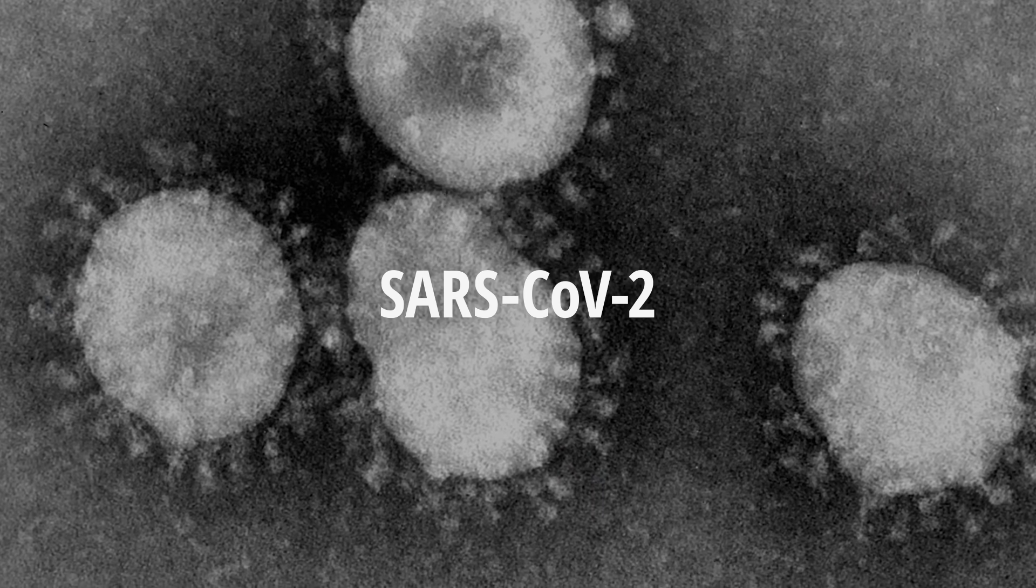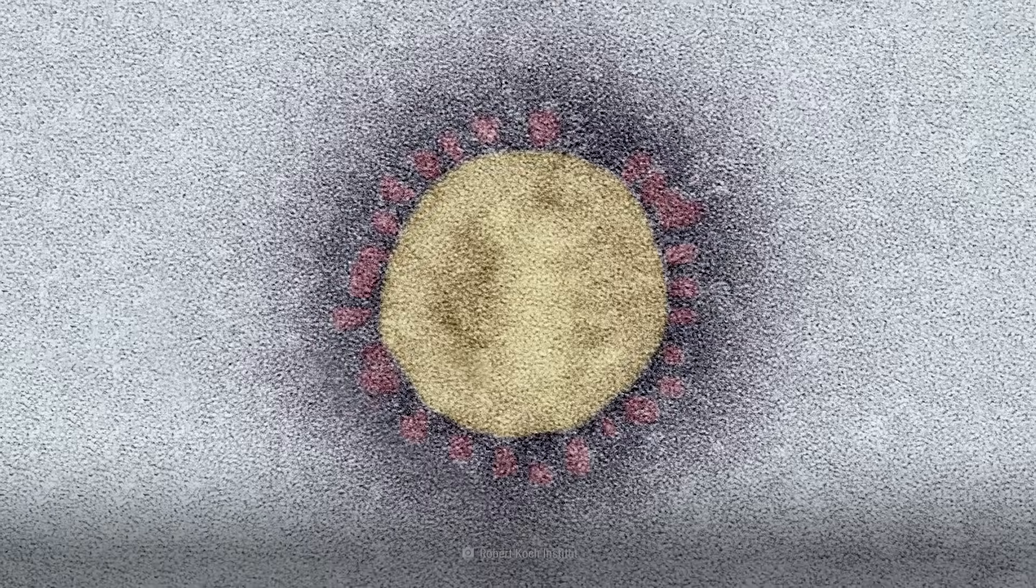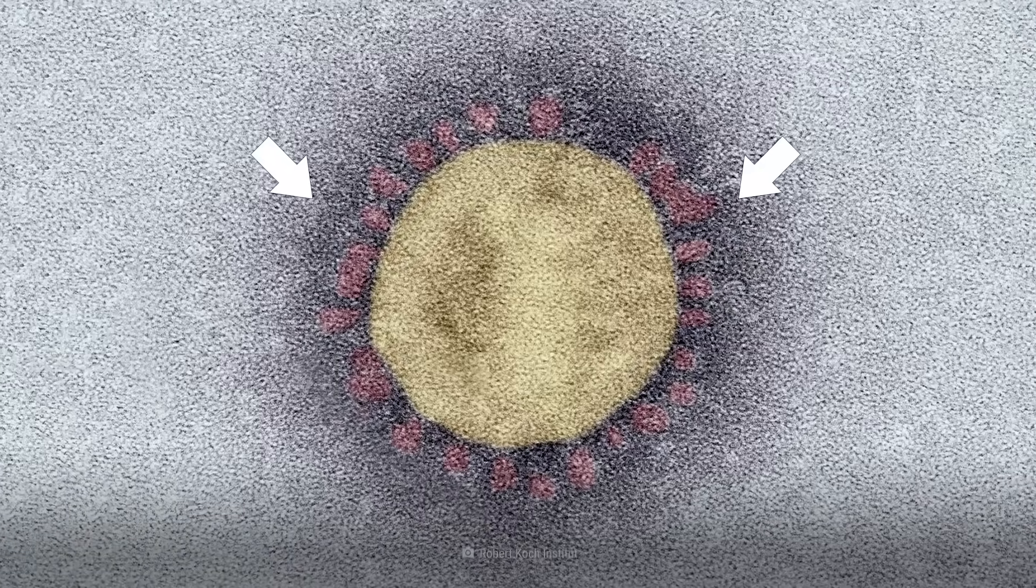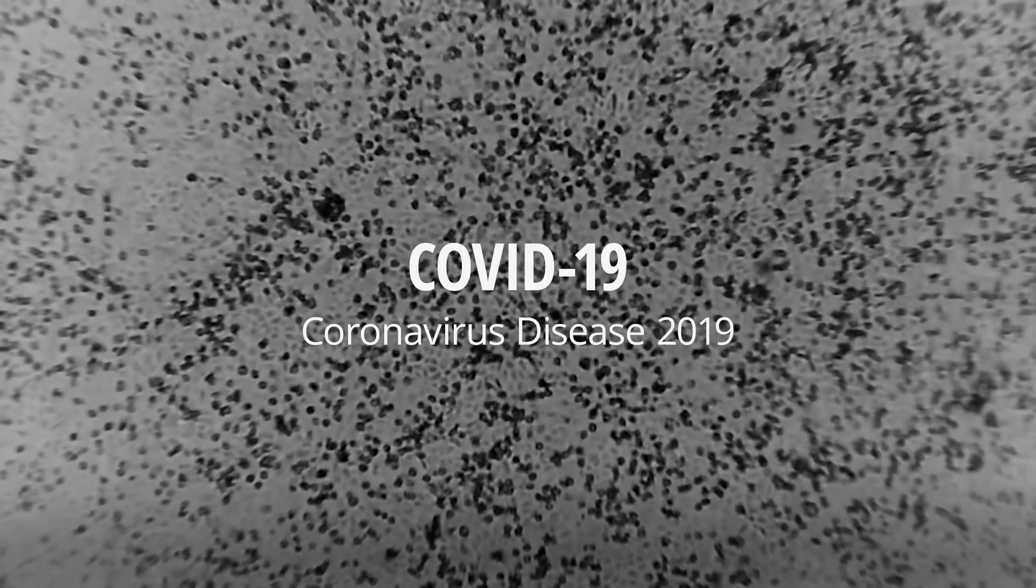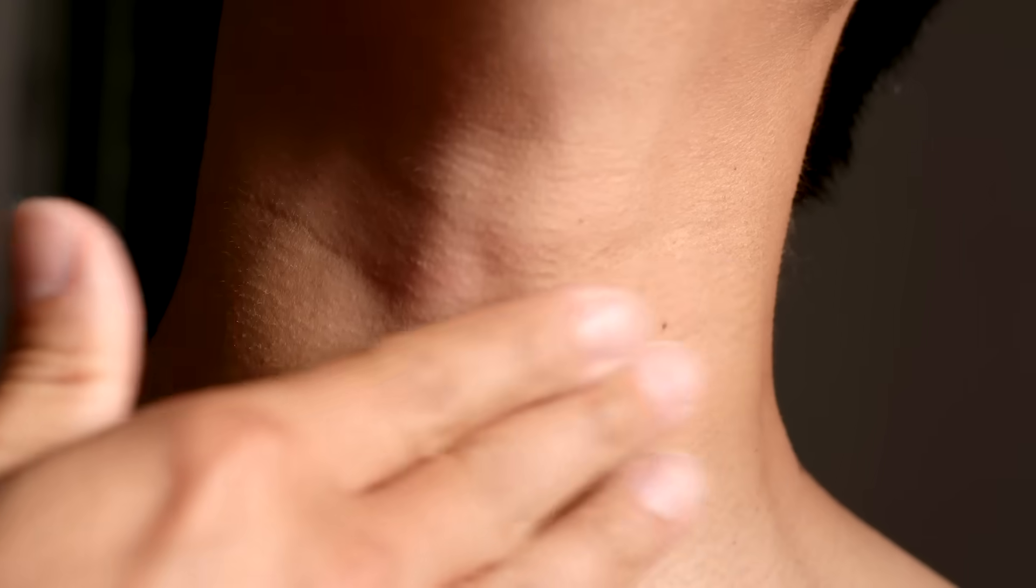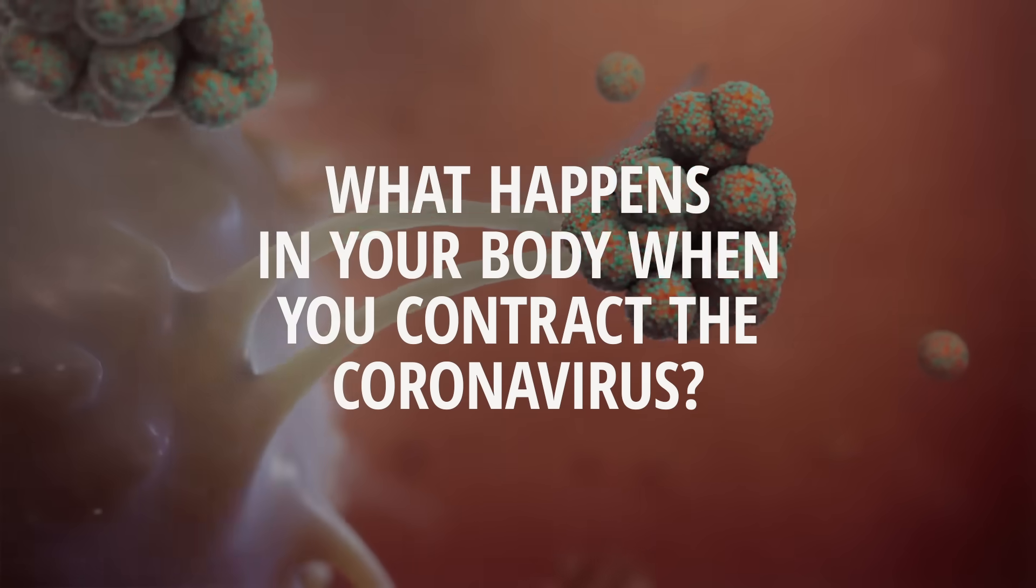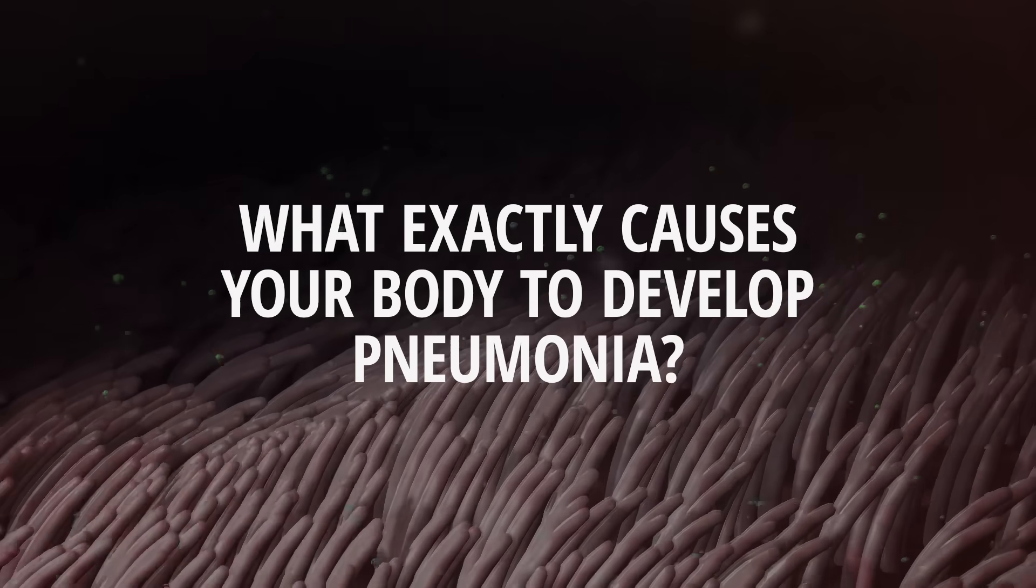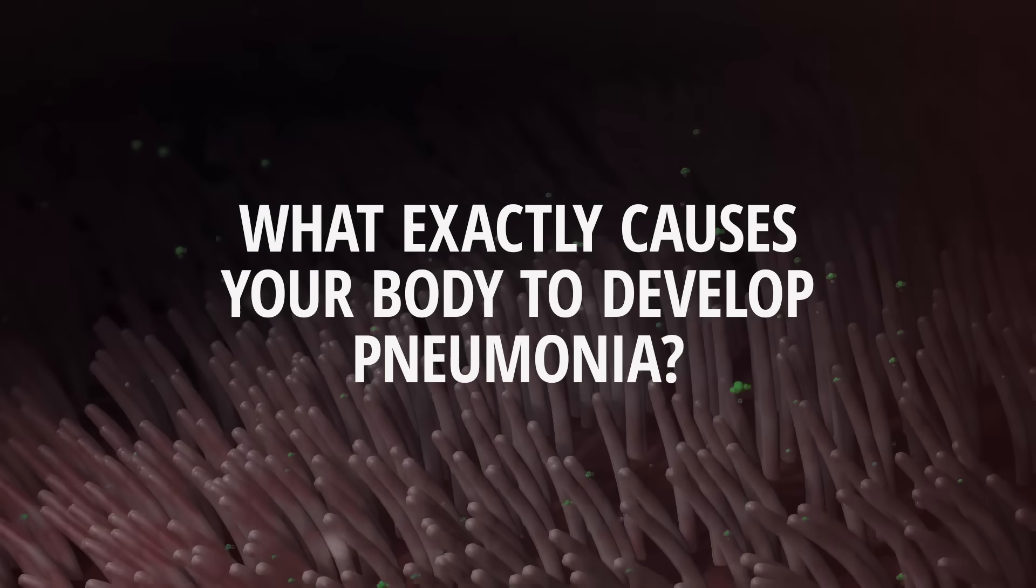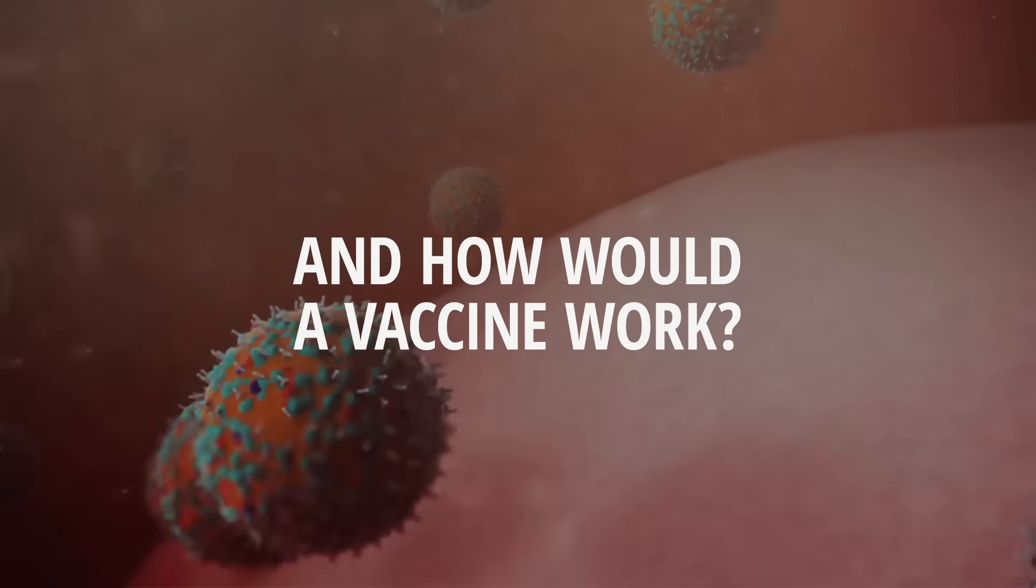This is SARS-CoV-2. It belongs to the family of coronaviruses, named for the crown-like spikes on their surfaces. SARS-CoV-2 can cause COVID-19, a contagious viral infection that attacks primarily your throat and lungs. What actually happens in your body when you contract the coronavirus? What exactly causes your body to develop pneumonia? And how would a vaccine work?